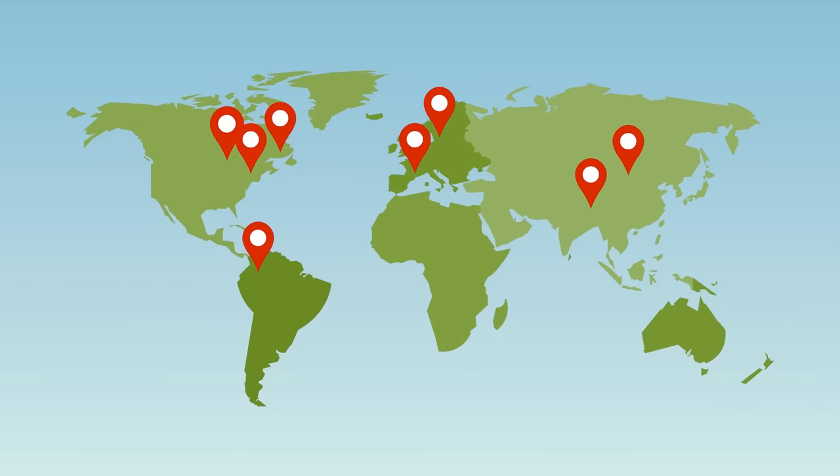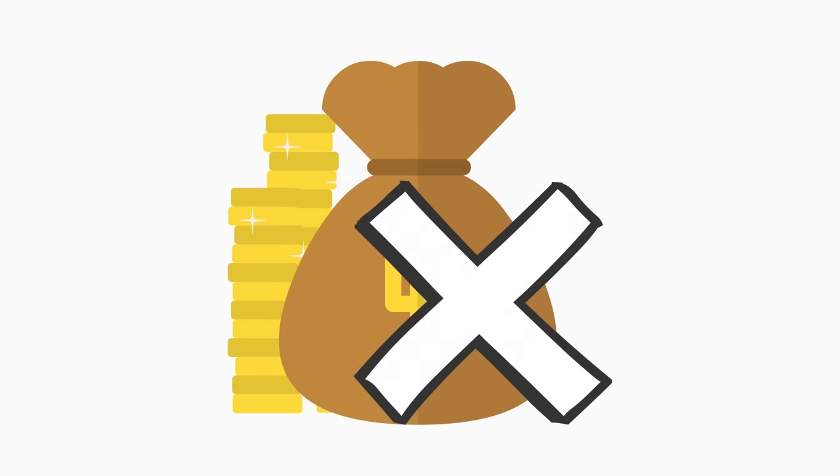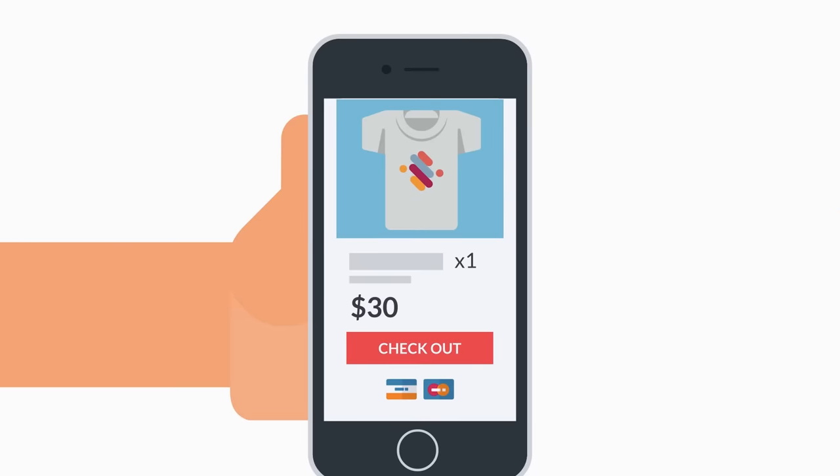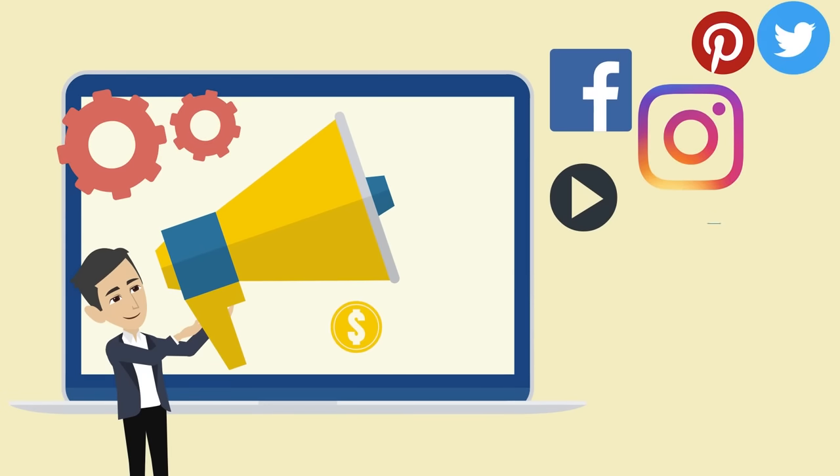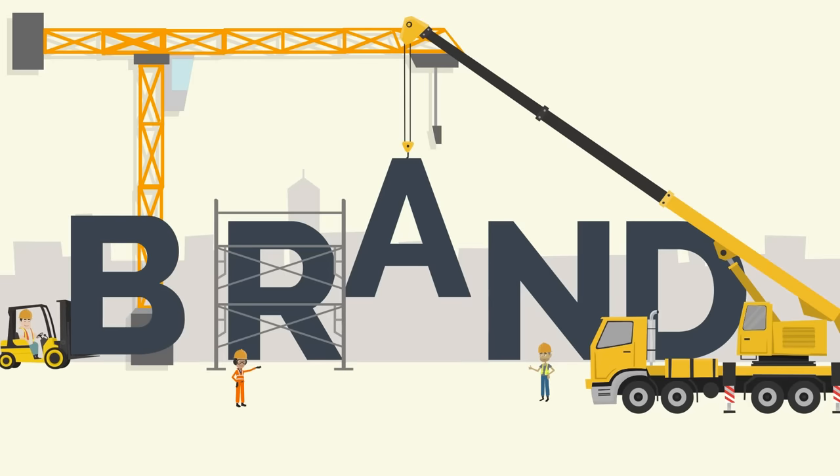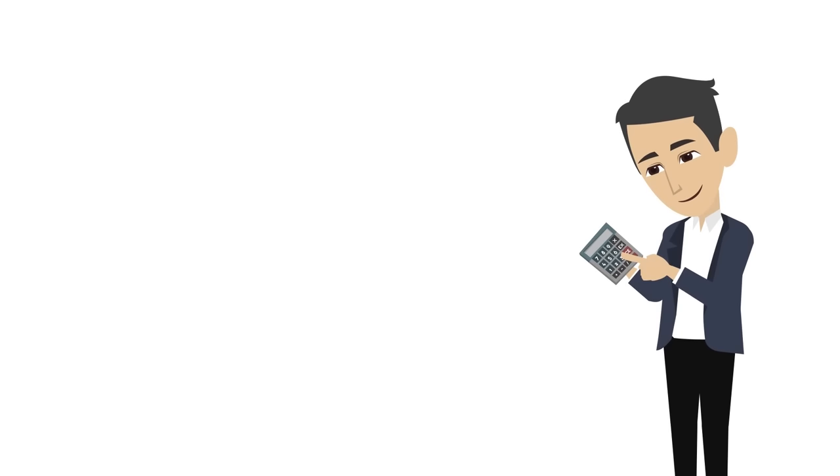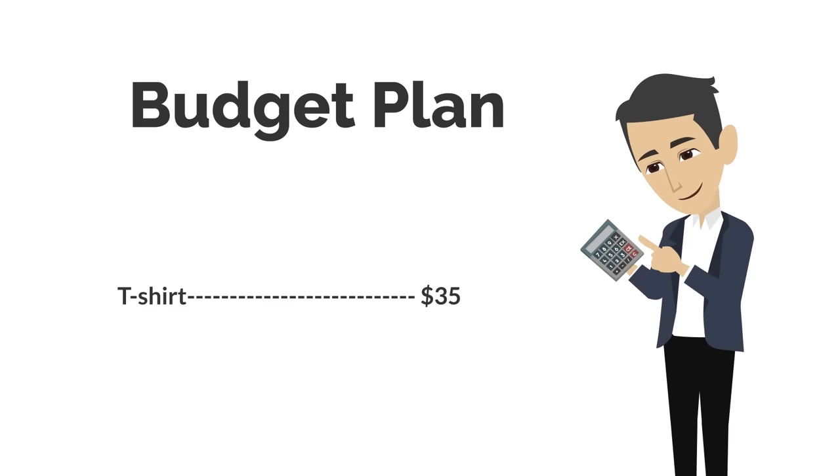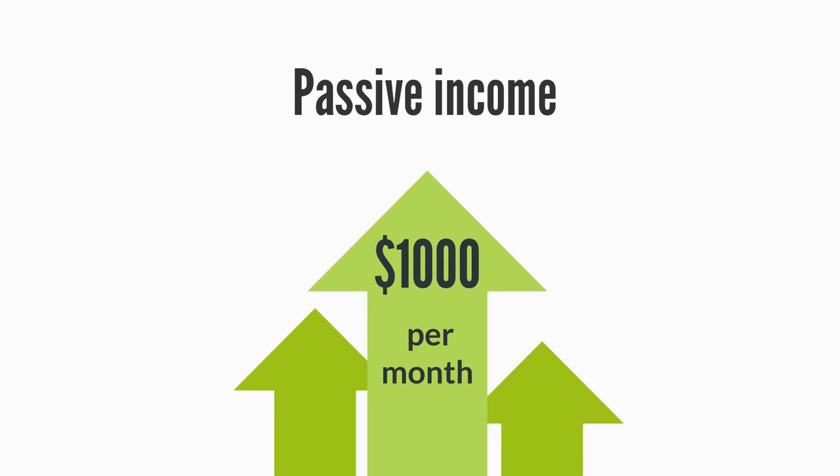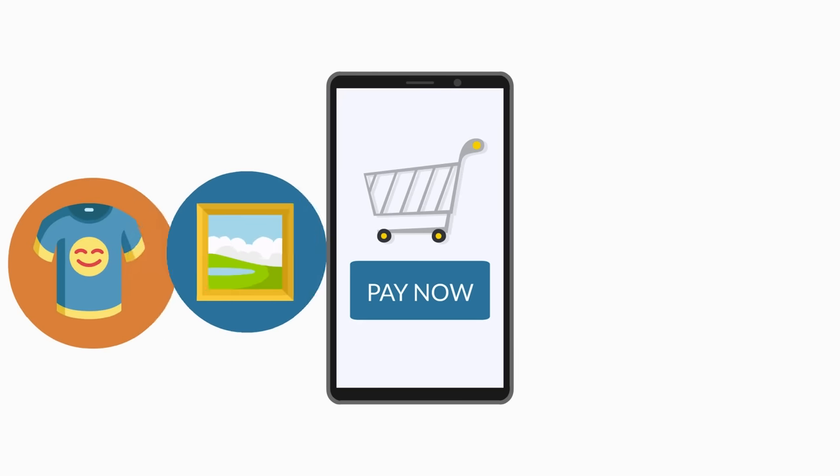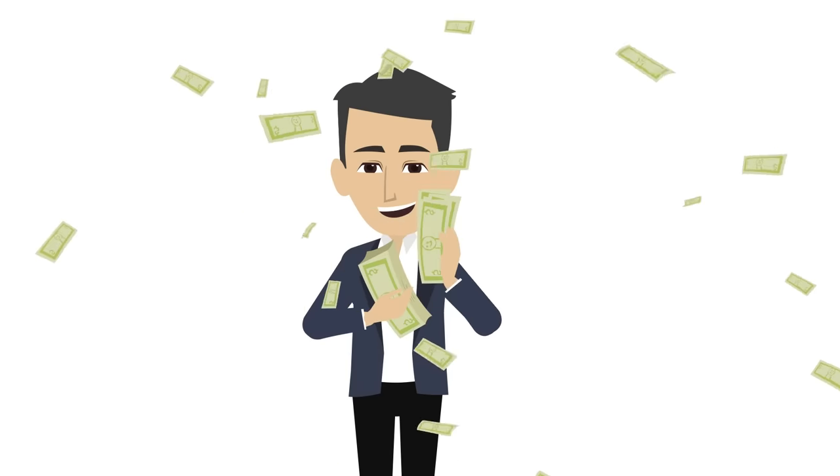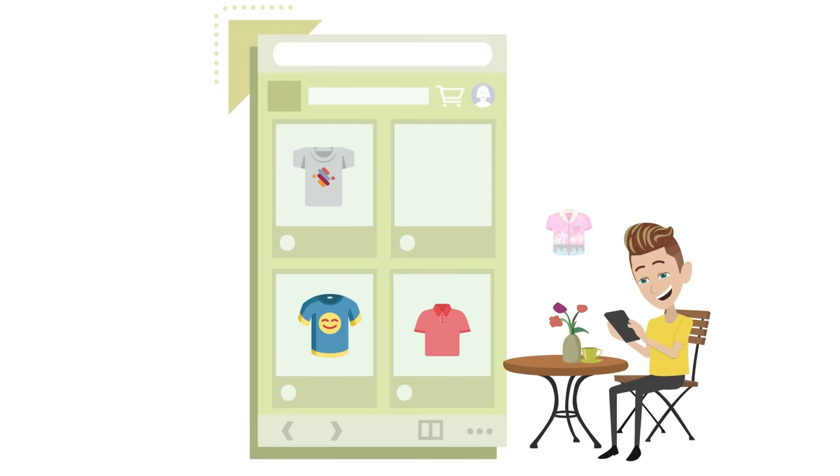The process starts with creating your designs using graphic design software or hiring a talented designer from specific platforms. Once you have your designs ready, you simply upload them to the print on demand platform. Choose the products you want to offer and set your prices. Print on demand services offer a global reach without the need for upfront investment, storage space, or logistics. When a customer makes an order, the platform takes care of printing, packaging, and shipping the product directly to the customer. Your focus can be on marketing and promoting your designs through social media, collaborations, and building your brand identity.